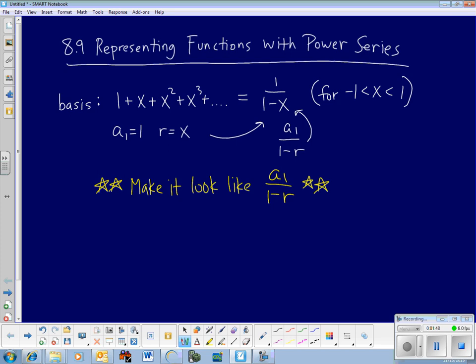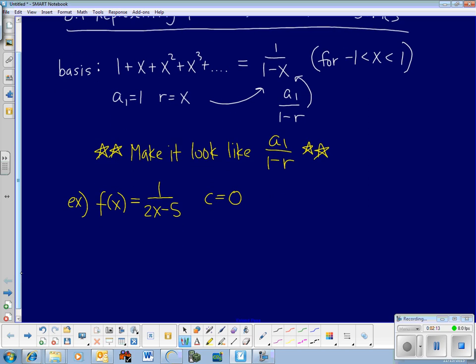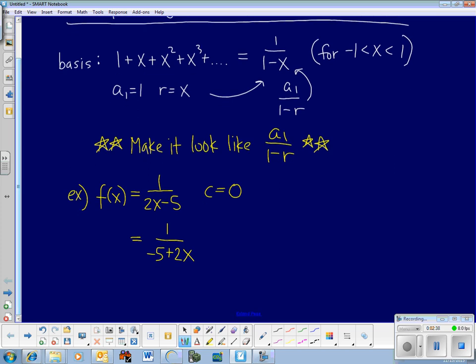So let's start with an example. Let's look at the function 1 over 2x minus 5. And these are going to have centers given to us. We need to know where to base our power series. So this one's going to be centered at 0. So if I can make it look like a₁ over 1 minus r, then I can express this function as an infinite series. So a₁ over 1 minus r. This one, I need to get a 1 in this bottom-left location. So I'm going to start by just rearranging like that. Now this is pretty close, except I don't have a 1. I have a negative 5.